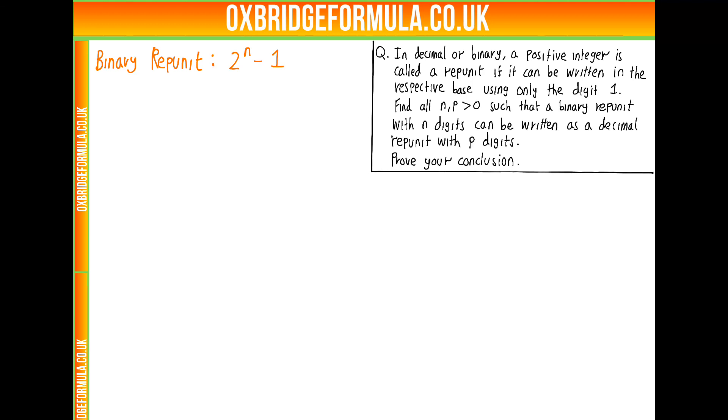So now our next port of call is try and get a handle on what we think about this conjecture. What are n and p such that this will be true? Let's try a few examples. So 2 to the 1 minus 1 is 1, which is a decimal repunit. 2 to the 2 minus 1 is 3, which is not a decimal repunit. And we discover that up to 2 to the 8, only 2 to the 1 minus 1 gives a decimal repunit.